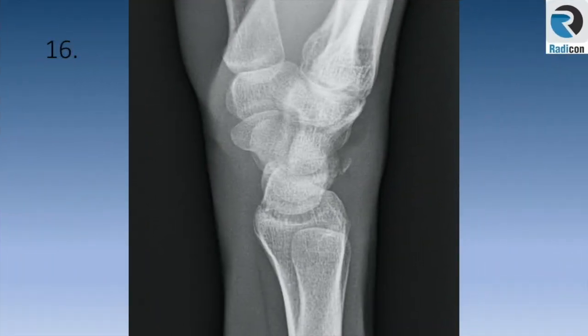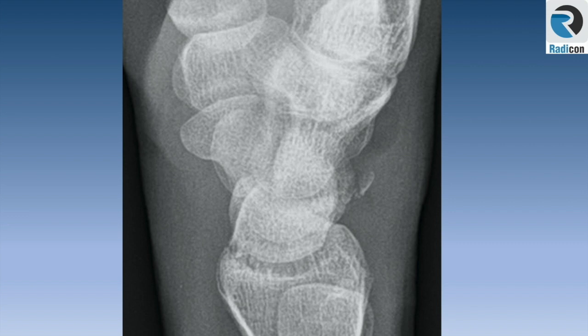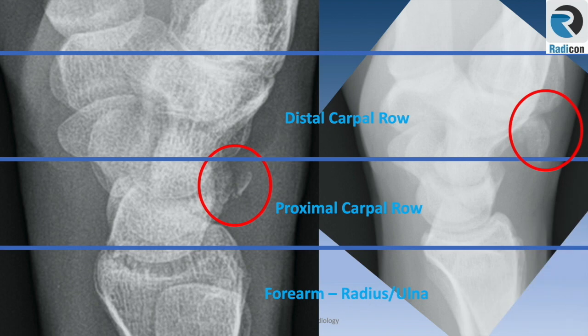Case 16 is a lateral wrist view. Let's zoom it up. There is a small avulsion fragment at the dorsal aspect of the carpal bones, in keeping with an avulsion fragment from the dorsal aspect of the triquetral bone. This is the classic location of a triquetral avulsion fragment. If a similar fragment is seen a little more distally near the carpometacarpal joint, it could signify a hamate avulsion or metacarpal base fracture.